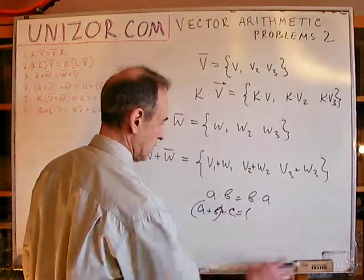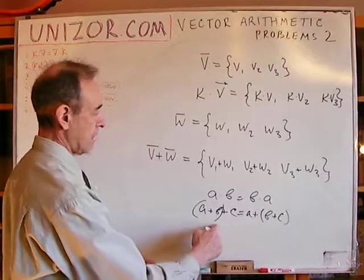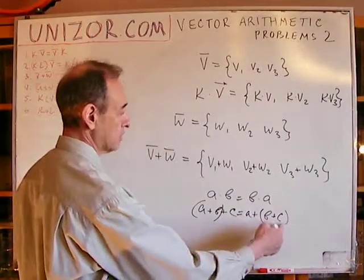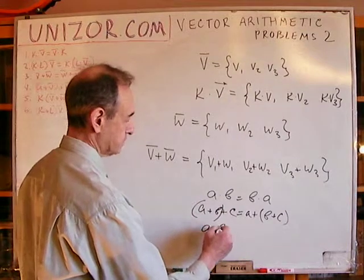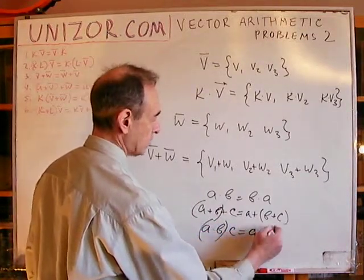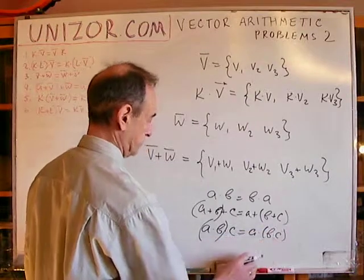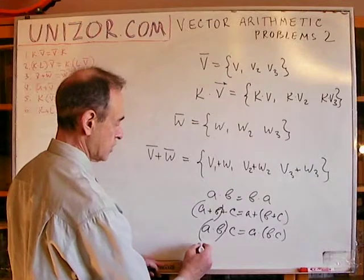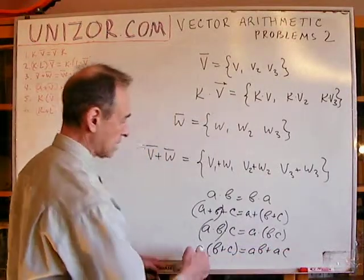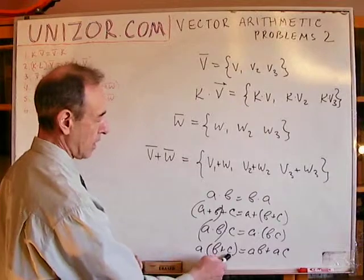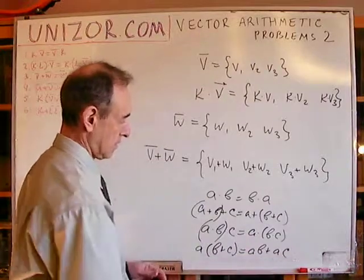You can put the parentheses any way you would like. So, first you add a and b and then add c to the result, or you add b and c and add that result to a. Same thing with multiplication: you can multiply it this way or you can multiply it this way. And finally, there is a distributive law.